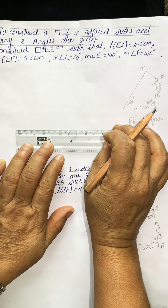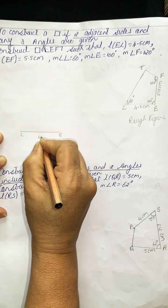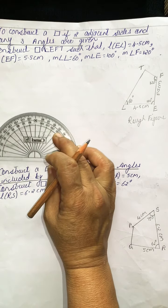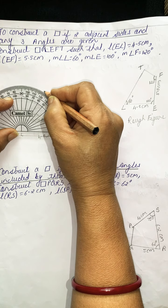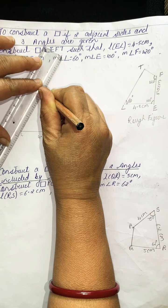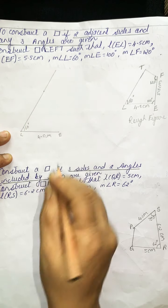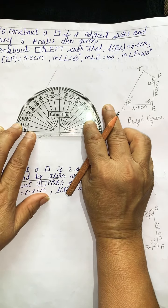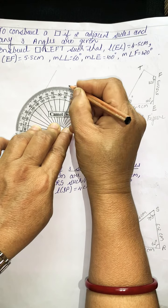LE is 4.5 centimetres. Now with the help of a protractor we will measure angle L. We will keep the protractor here — the 0 of the inner scale is coinciding, so we will take the inner scale up to 60 degrees. Now angle E is 100 degrees, so again I will keep the protractor at point E and use the outer scale to measure 100 degrees here.